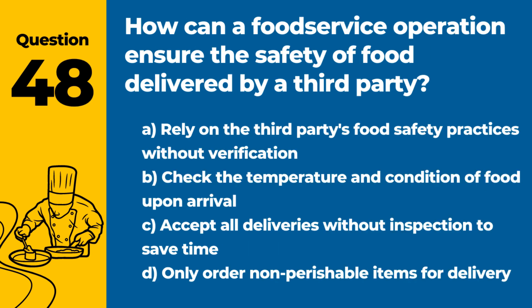Question 48. How can a food service operation ensure the safety of food delivered by a third party? Answer: B. Check the temperature and condition of food upon arrival. Verifying the safety of delivered food helps ensure it hasn't been compromised during transport.